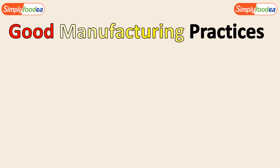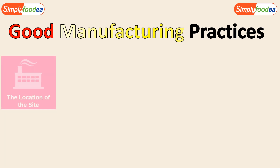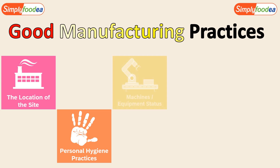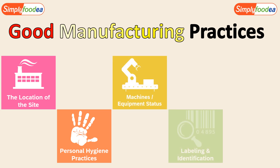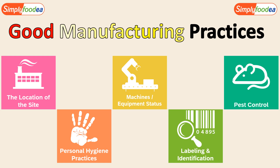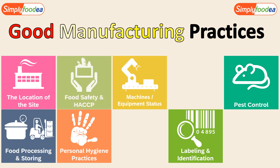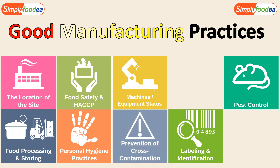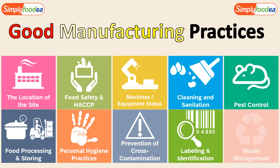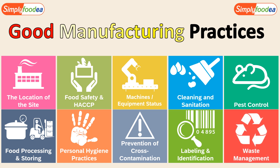So what are the main important elements of the GMP or the Good Manufacturing Practices in any food industry? First: the location of the site, then personal hygiene practices, machines and equipment status, labeling and identification of the product, pest control activities and integrated pest management, food processing and final product storing, food safety and HACCP, prevention of cross contamination, the cleaning and sanitation program, and waste management.